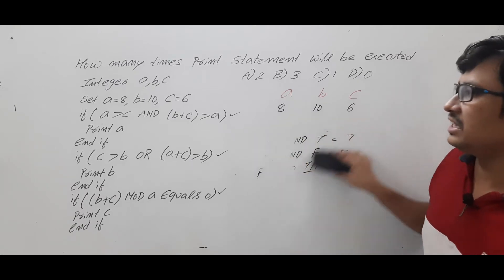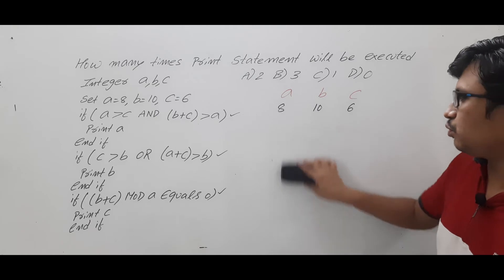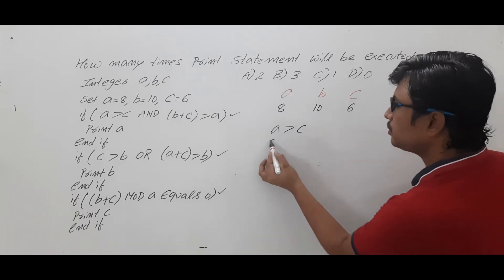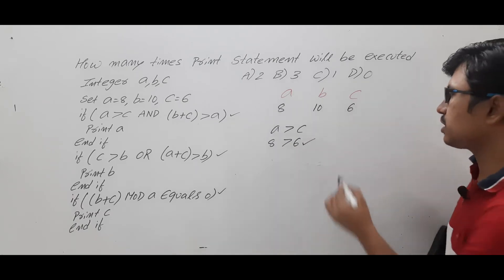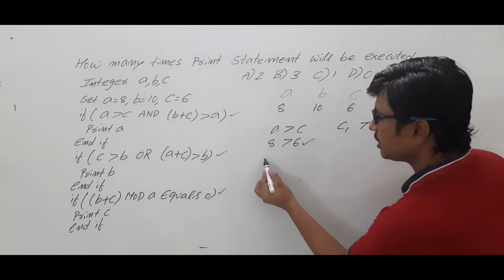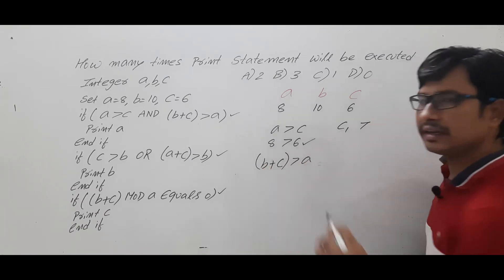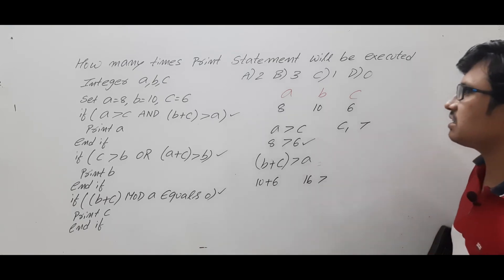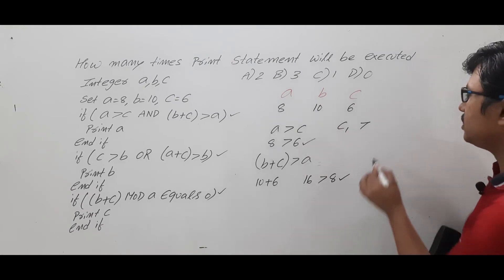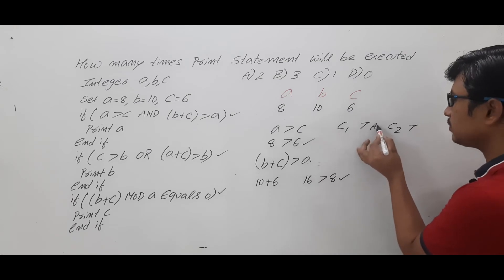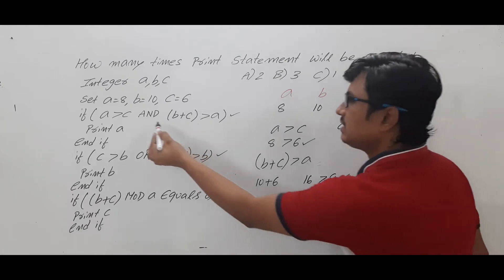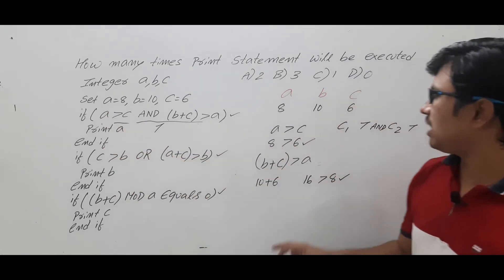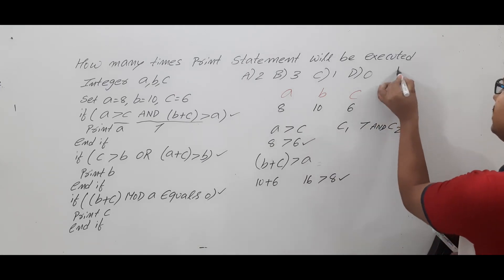Now look at whether condition 1 and condition 2 are true or false. Condition 1 says A greater than C — A is 8, C is 6, so 8 is greater than 6, condition 1 is true. Condition 2 says B plus C greater than A — 10 plus 6 is 16, and 16 is greater than 8, so condition 2 is also true. Both conditions are true, so logical AND gives true, and print A executes — A value 8 is printed. So print has executed once.